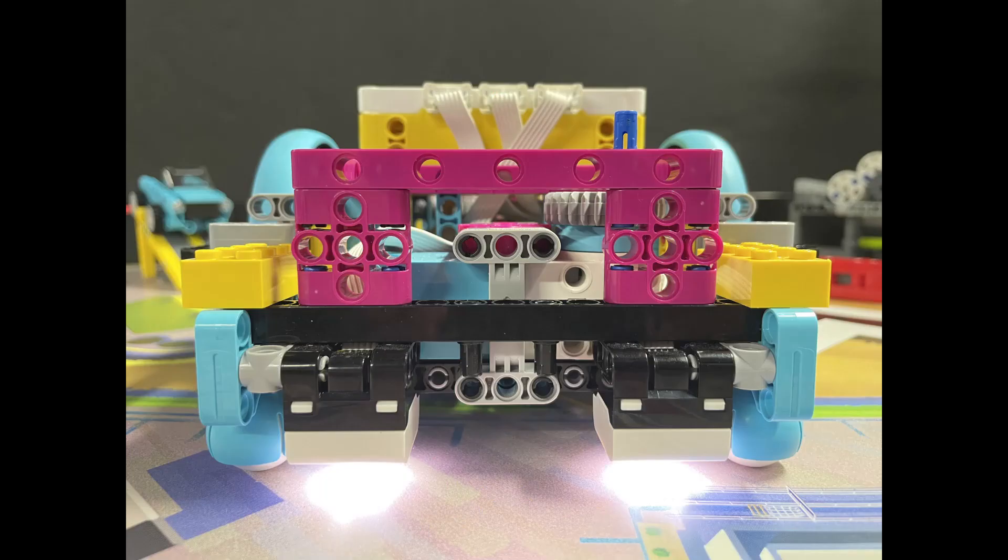For our Spike Prime solution, we are just using the robot itself, no attachments. The color sensors in the front of the robot function as a sort of bumper which we use to activate the mission.